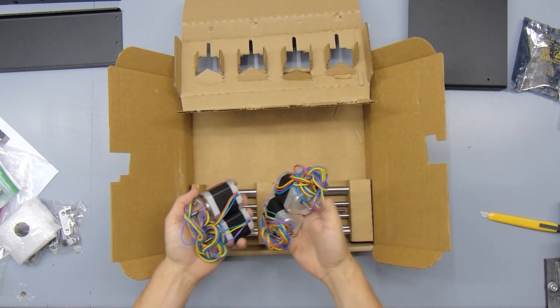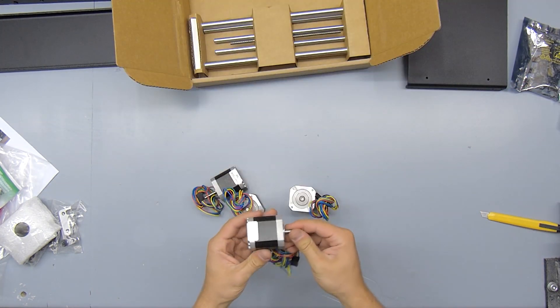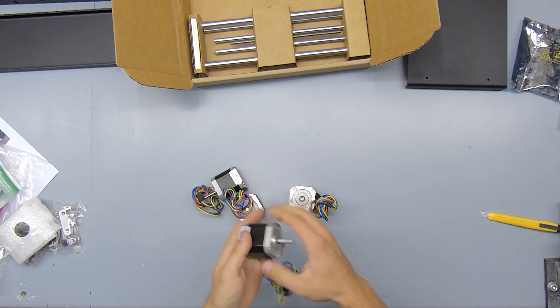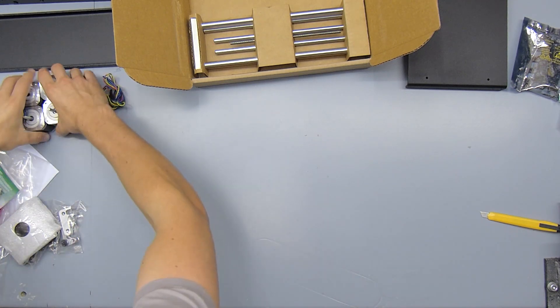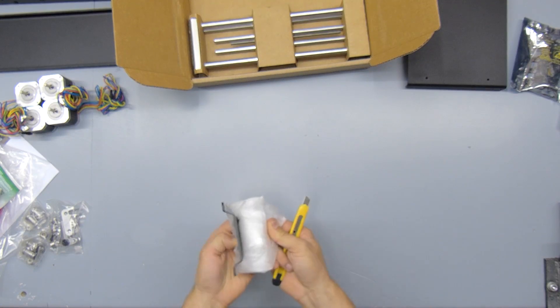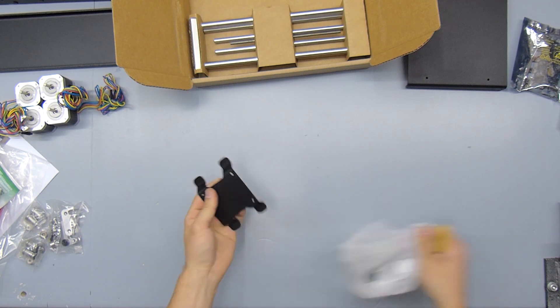So these are four identical Kusan steppers. These are actually fairly beefy ones. Let's look at the bearing holder for the x-axis.